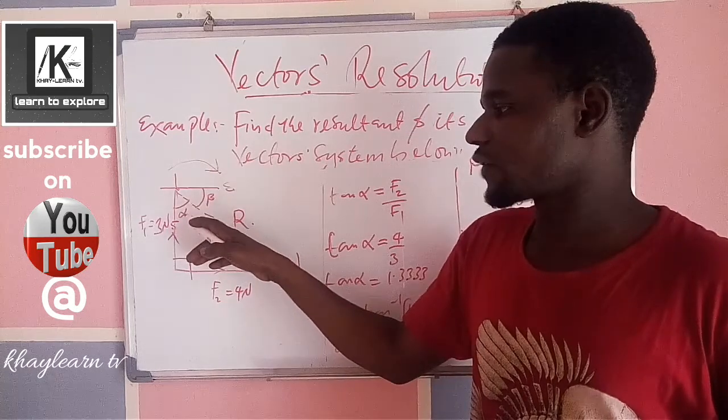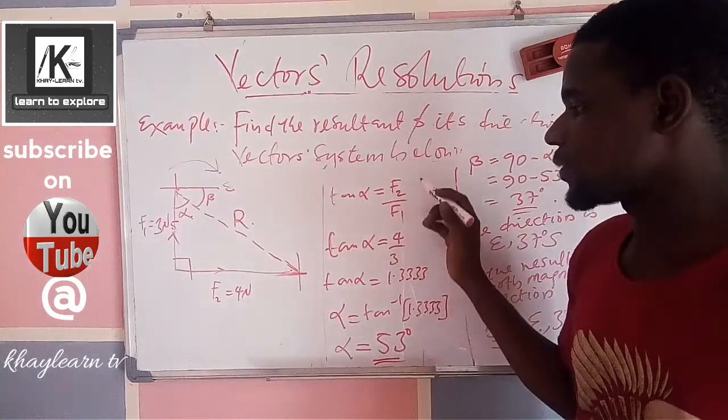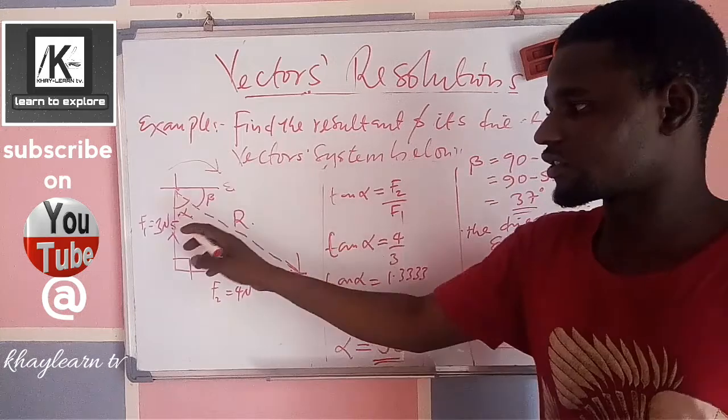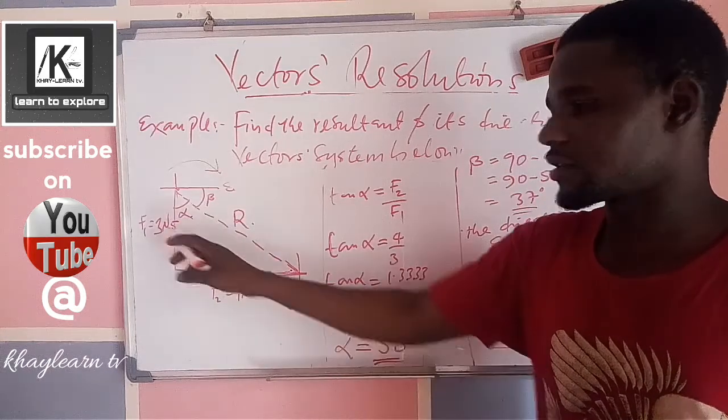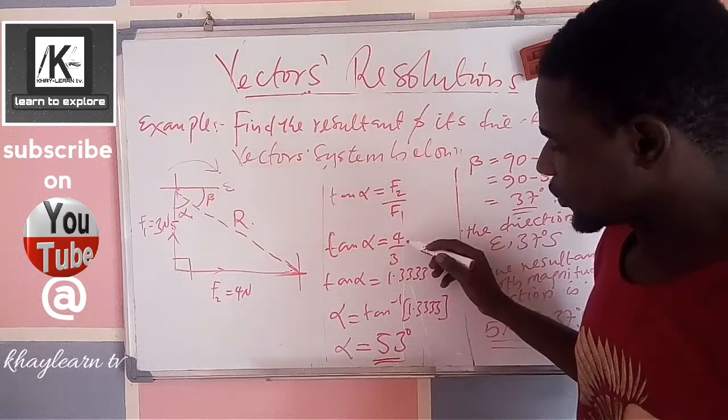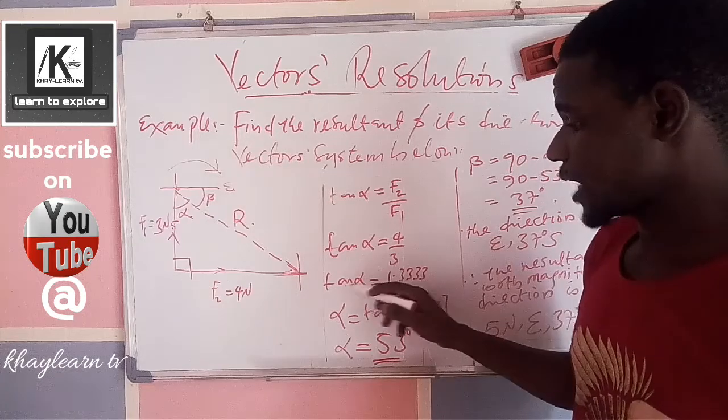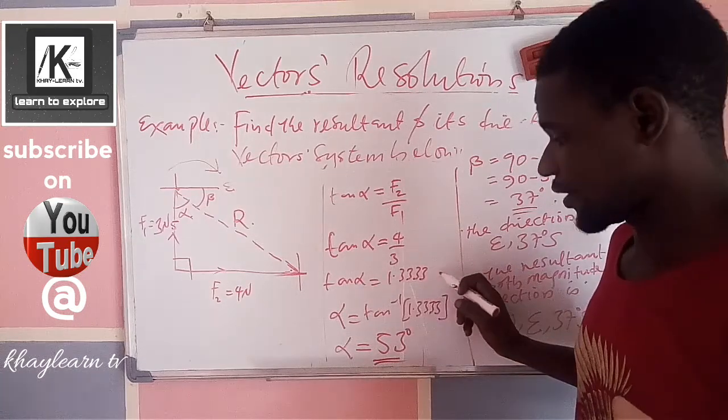By taking the tangent of this angle, which we have tan alpha equals F2 over F1, being opposite over the adjacent. When you are considering this angle, the opposite is here, the adjacent is here. Now, all we have is F2 over F1, and the F2 is 4.0, and the F1 is 3.0. So, when we divide, we are going to have tan alpha to be 1.3333.